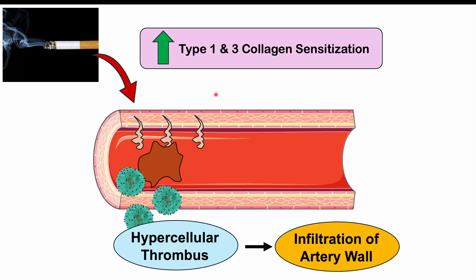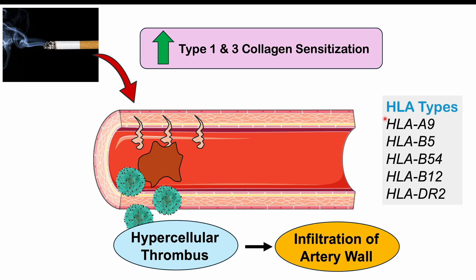We can also see issues with decreased or dysfunctional vasorelaxation, which is more of a secondary effect. Why does this occur in certain individuals and not others? It has to do with their genotype — more specifically, their HLA allele. Some of the HLA types associated with Buerger's disease include HLA A9, HLA B5, B54, B12, and DR2 alleles.